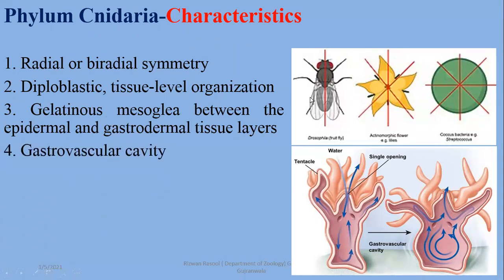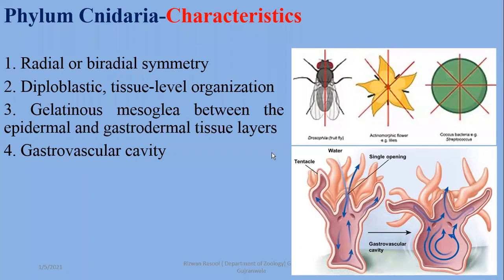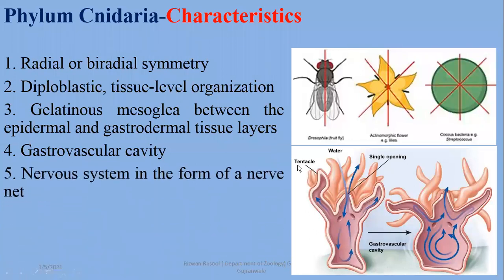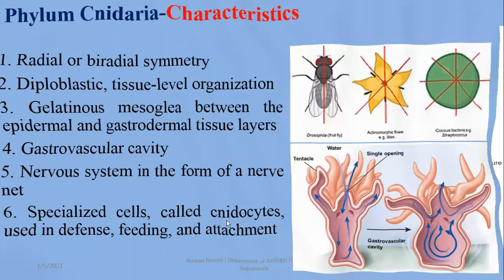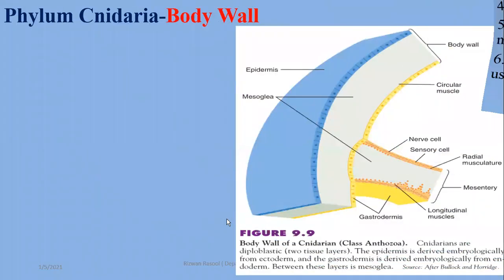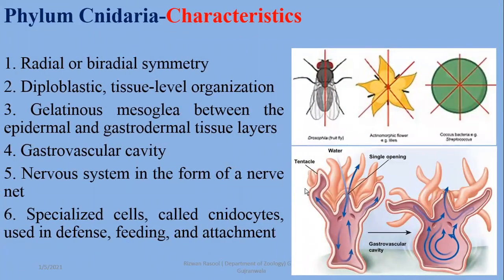If there are cells in the mesoglea, they will be either ectodermal or endodermal in origin. One very important feature is the gastrovascular cavity — Cnidarians have a single opening for both the inlet and outward movement of food as well as water. The nervous system is a diffuse type in the form of a nerve net. They have specialized cells known as cnidocytes, which are used in defense, feeding, and attachment. That is why they are named phylum Cnidaria, and the coelenterates are named after their body cavity, the coelenteron.